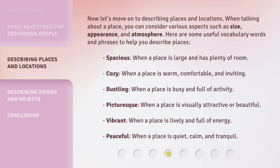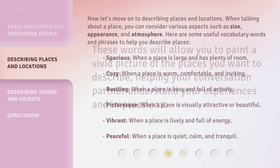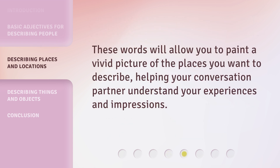Vibrant — when a place is lively and full of energy. Peaceful — when a place is quiet, calm, and tranquil. These words will allow you to paint a vivid picture of the places you want to describe, helping your conversation partner understand your experiences and impressions.